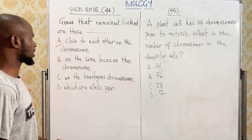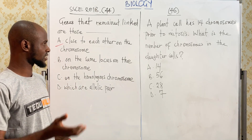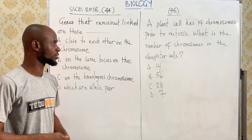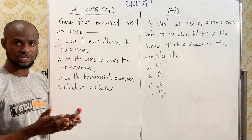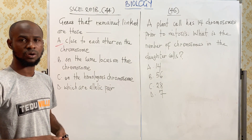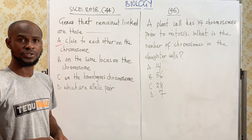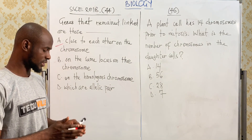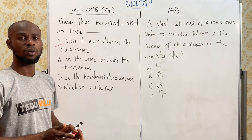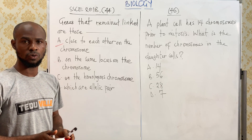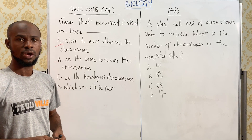Now this is the simple explanation. In the last question, we talked about the crossing over — that is, the crossing over of the homologous chromosomes.